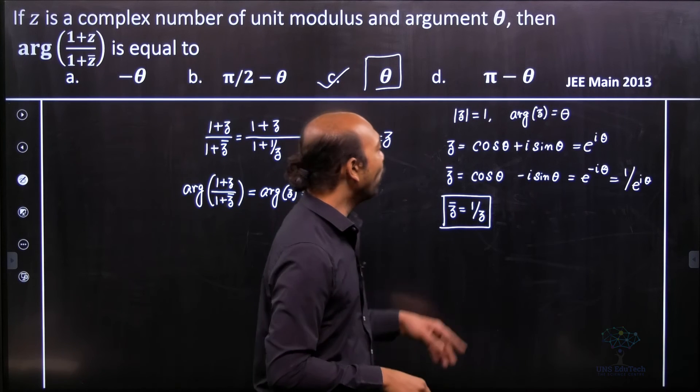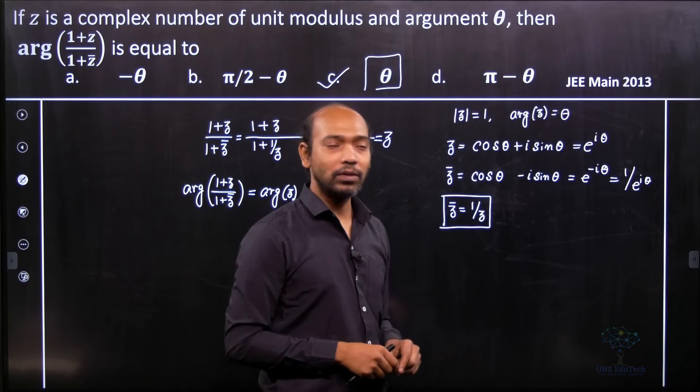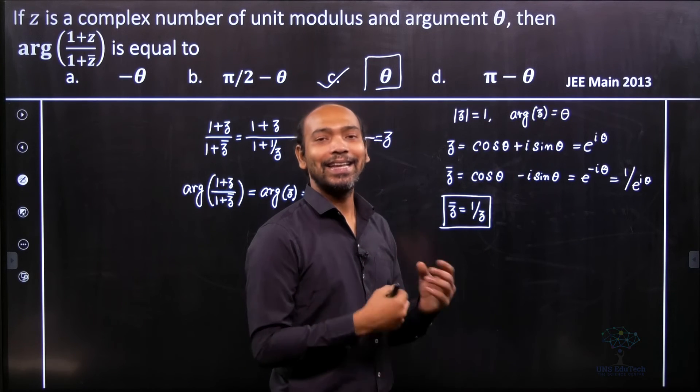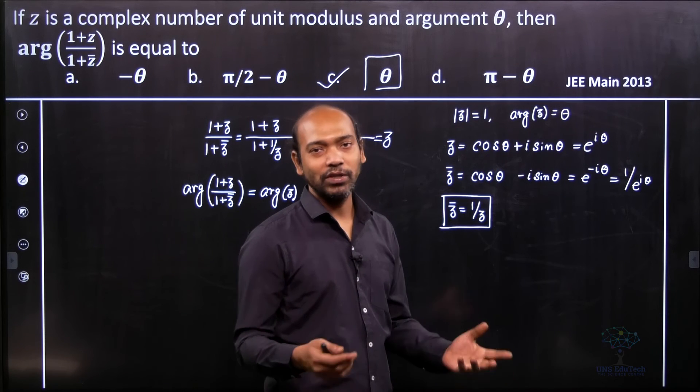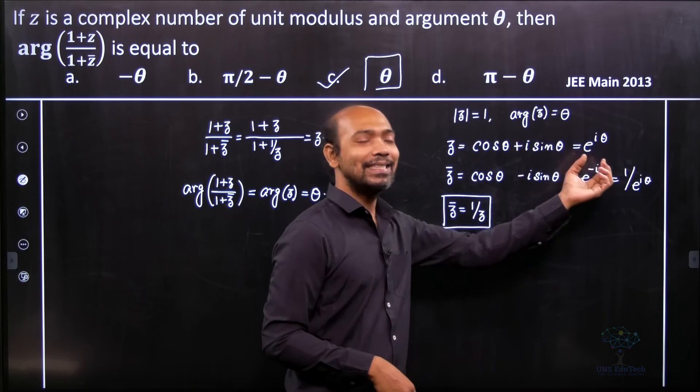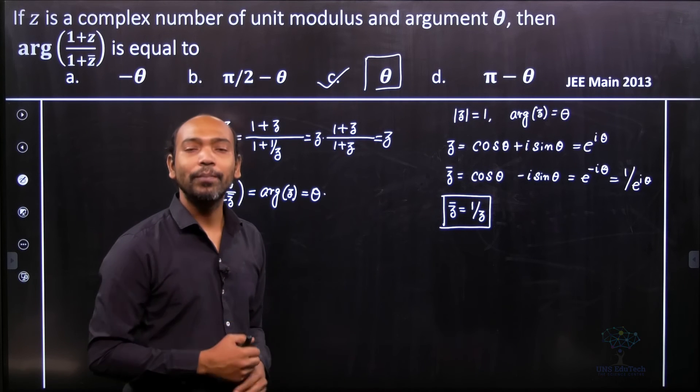Any complex number with r be the modulus and argument is theta can be represented as r cos theta plus r sine theta, but we can easily write it as r into e to the power i theta.